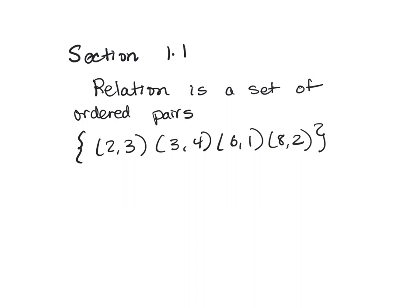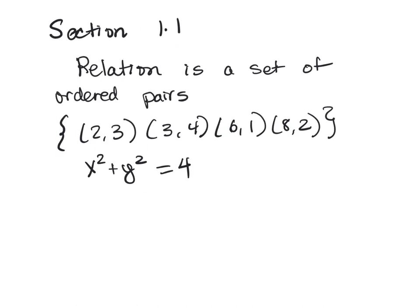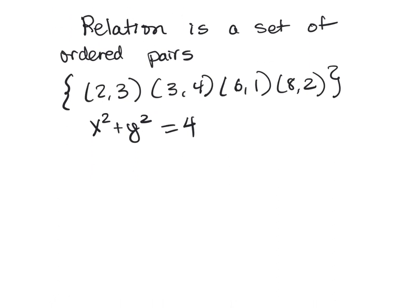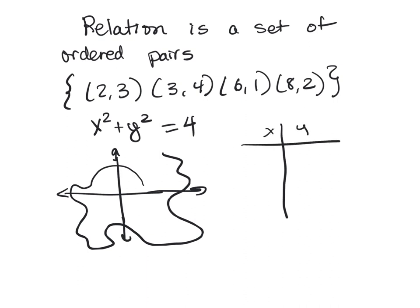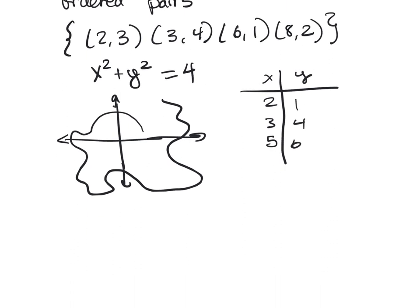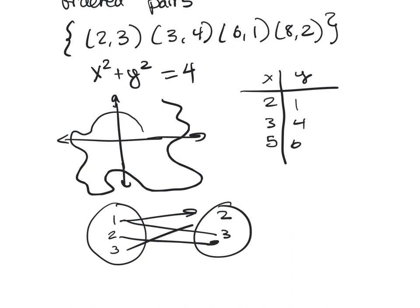You can write relations in lots of ways, you can write them as equations. So any x, y that fulfills this equation is a relation. You can represent them as a graph, so any x, y on this graph is a relation. You can represent them in a table with your x's and your y's, and you can also represent them on some sort of mapping.